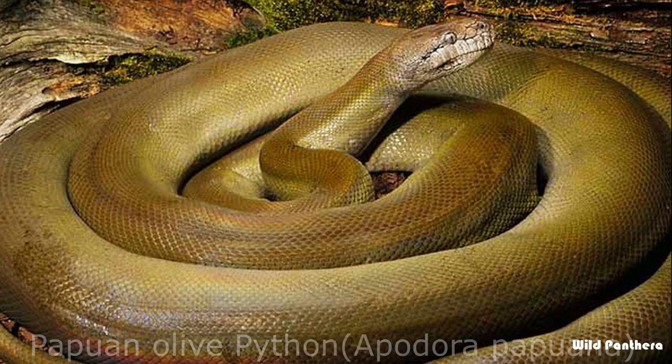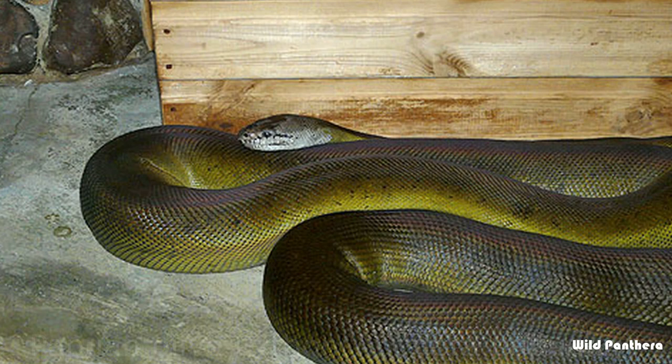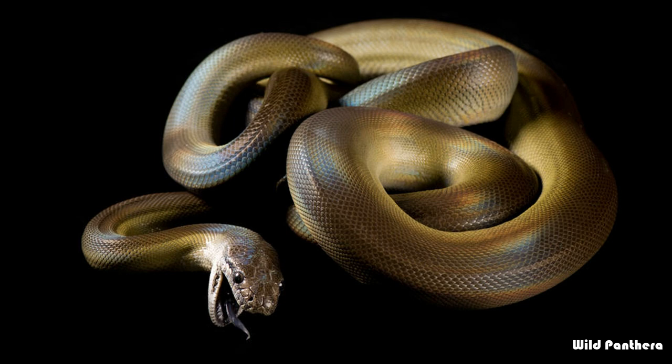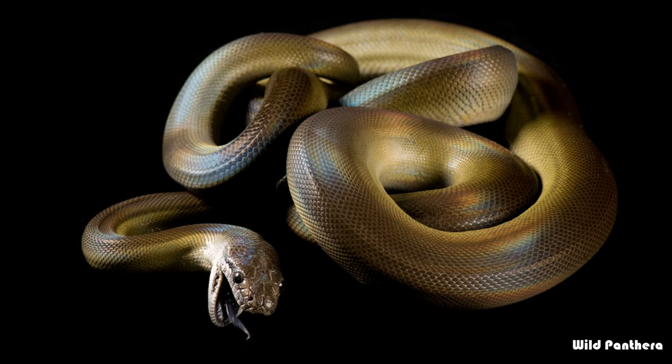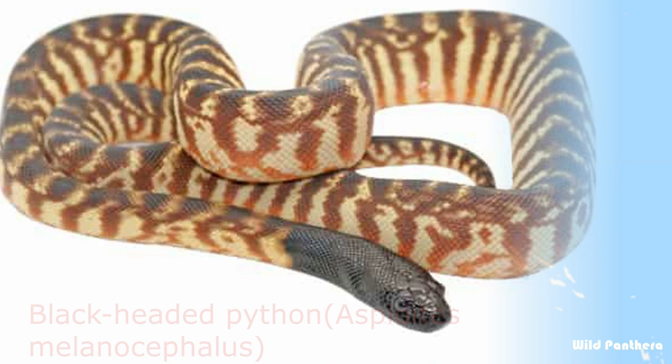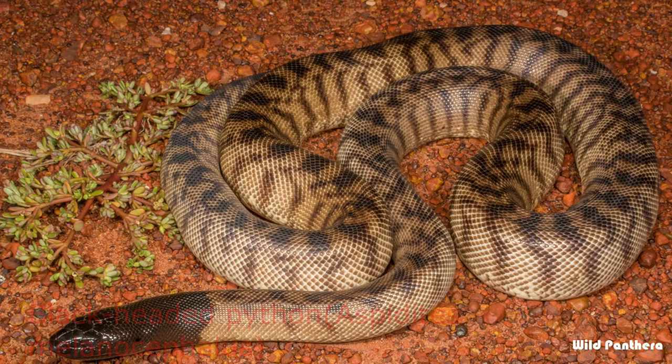Papuan Olive Python: Apodora papuana is a species of python commonly known as the Papuan Python or Papuan Olive Python. It is found in New Guinea and is the only species in the genus Apodora. Black-headed Python: This is a species of snake in the Pythonidae, native to Australia.